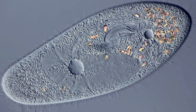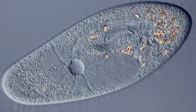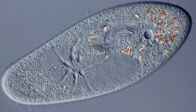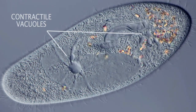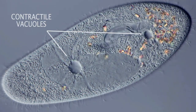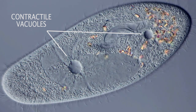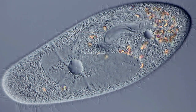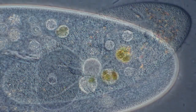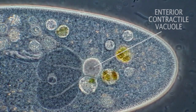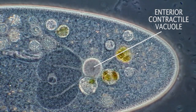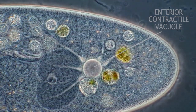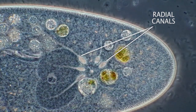Two contractile vacuoles are present, occupying definite positions, one near either end of the body. They lie between the ectoplasm and the endoplasm, close to the dorsal surface, and communicate with a large portion of the body by means of a system of radiating canals, 6 to 10 in number.